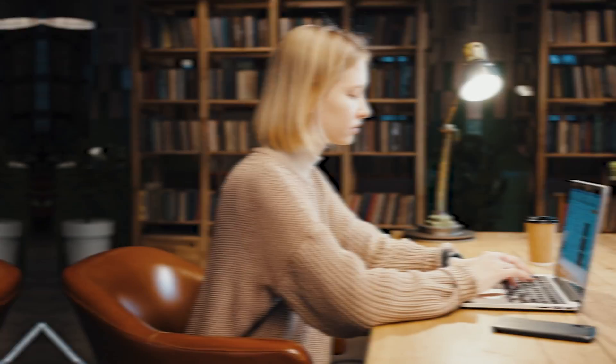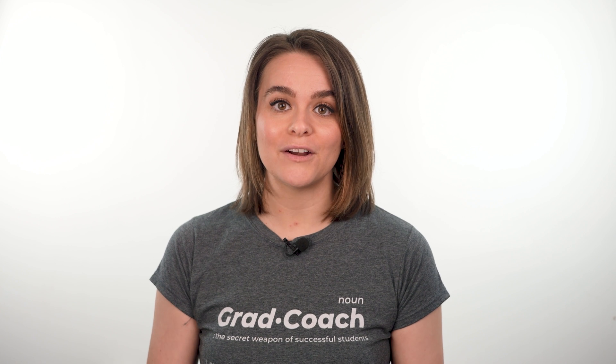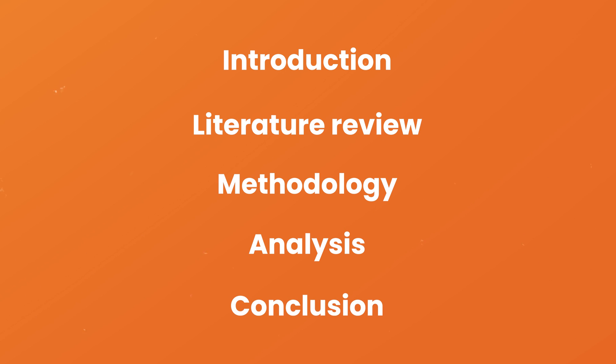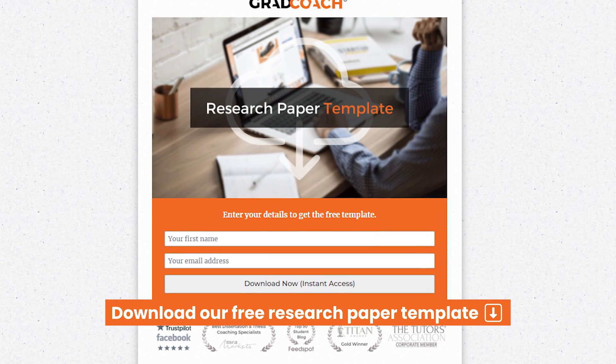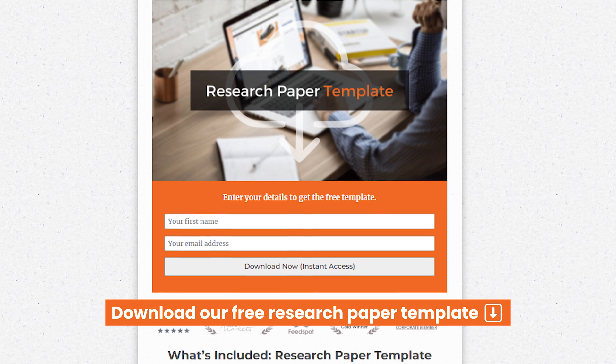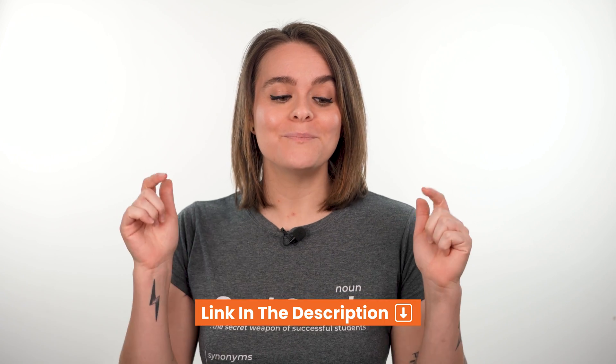To recap, step two is all about developing a rough outline for your research paper before you start writing. This outline will ensure that you stay focused and present a clear narrative throughout your paper. In terms of structure, you'll typically need an introduction, a literature review, a methodology, an analysis section, and a conclusion. Our free research paper template covers all of these and provides access to loads of free resources, so be sure to grab a free copy below.